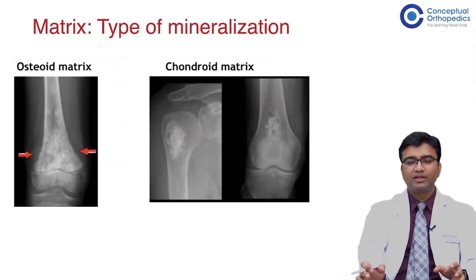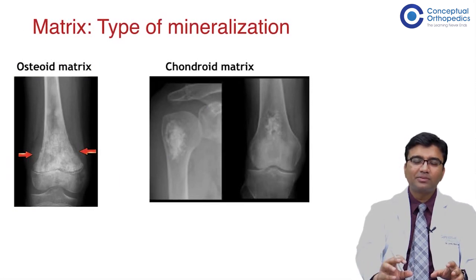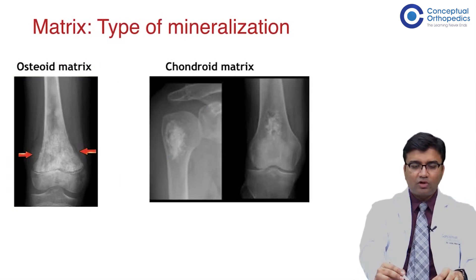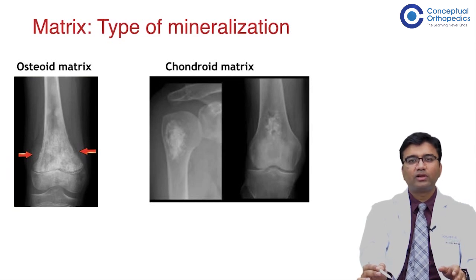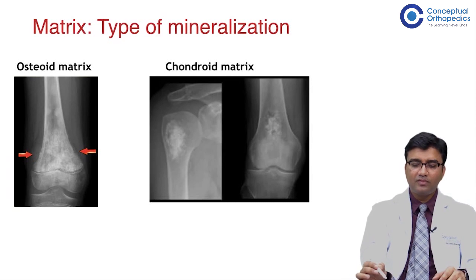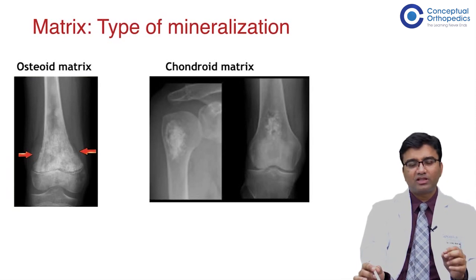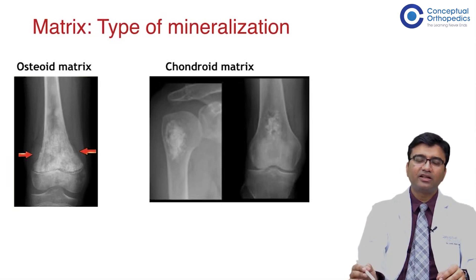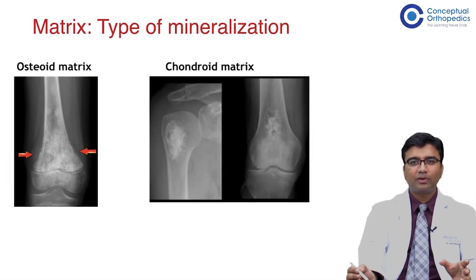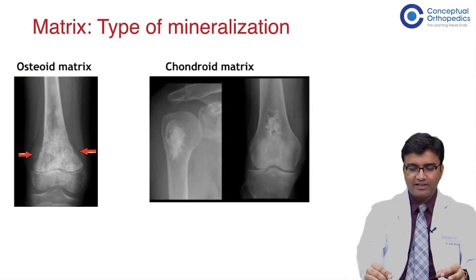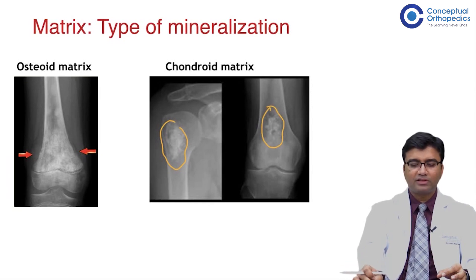Moving to the matrix, which is the ground substance present in the body of the tumor: osteoid matrix is seen mostly in osteosarcoma or osteoid-producing tumors like osteoblastoma. Chondroid matrix means cartilaginous matrix, seen in cartilaginous tumors — the benign ones include enchondroma and chondromyxoid fibroma, and the malignant ones include chondrosarcoma. Subsequent lectures will go into further detail on classifying these tumors.